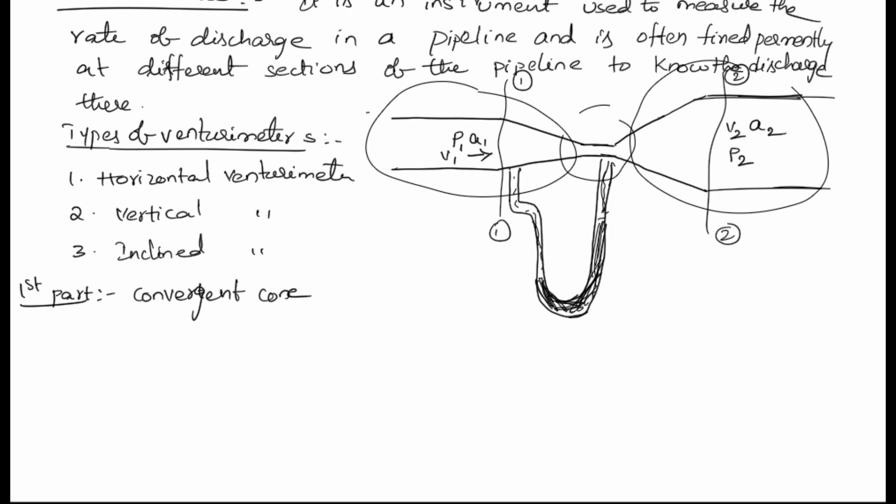This is the pipe before and after the venturi meter, where the pipe continues. In the pipeline we cut at a section and keep the venturi meter in between to calculate the discharge. The first part connected to the start of the pipe is the convergent cone. At the starting point of the convergent cone, the area equals the actual area of the pipe, but gradually as the fluid passes through, the area decreases.